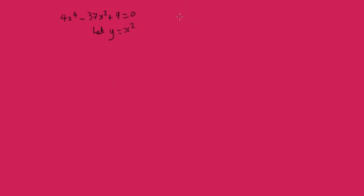Now we can do that. And we're going to substitute it in. So 4x to the power of 4 will become 4y squared. And that's going to be minus 37y plus 9 equals 0. Now this just looks like what we've been solving. So let's solve it.